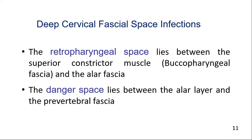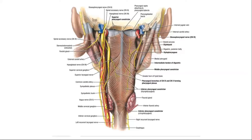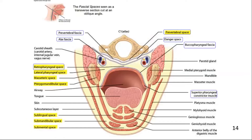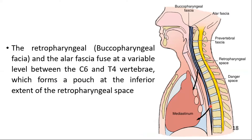The retropharyngeal space is located behind the posterior pharyngeal wall. The anterior boundary is formed by the superior, middle, and inferior pharyngeal constrictor muscles and the buccopharyngeal fascia, and the posterior boundary is the alar fascia. It contains loose areolar connective tissue and lymph nodes, and may easily become involved by infections extending from the lateral pharyngeal space. The superior boundary is formed by the base of the skull, and the caudal boundary is typically located between the sixth cervical and fourth thoracic vertebrae, where the alar fascia fuses anteriorly with the buccopharyngeal fascia.